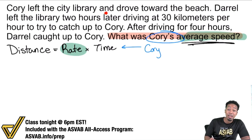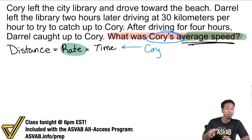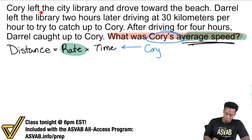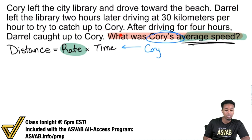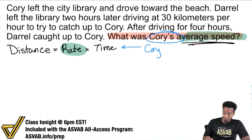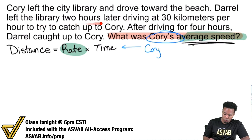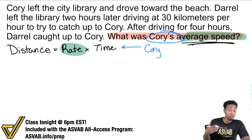Let's start with the information. "Corey left the city library and drove toward the beach." No real hard numbers there, and that's okay — this is giving us context, the story. "Daryl left the library two hours later, driving at 30 kilometers per hour to try to catch up to Corey." So was that information useful? I don't know yet. But it says Daryl left two hours later, driving at 30 kilometers per hour — that was for Daryl, not Corey.